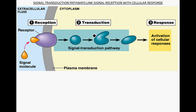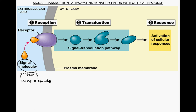Cells communicate with one another — 'talk' being, of course, a metaphor. The way that they do that is by using signal molecules, and these molecules are mostly proteins. Sometimes the signals are just chemicals themselves, even inorganic elements. This signal molecule has to be detected by receptors that are on the plasma membrane.